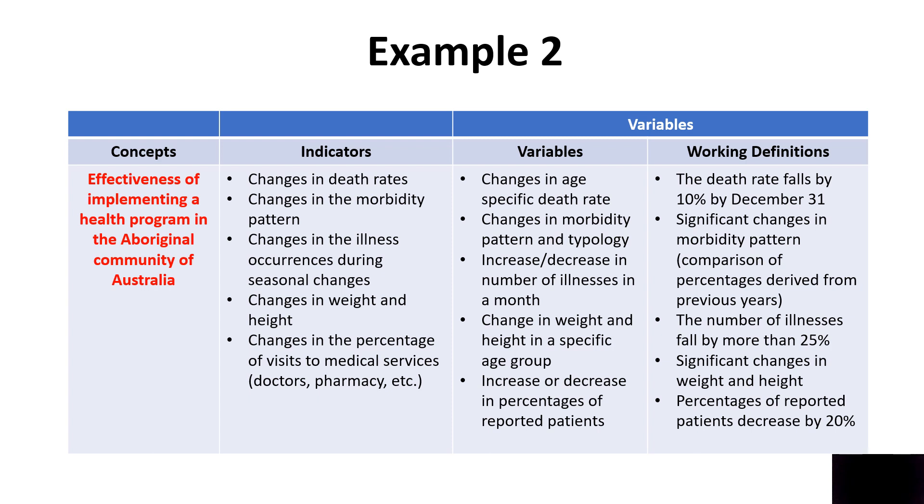What will be a variable? A variable is something that you should be able to measure. If I want to use the change in the death rate as an indicator of the effectiveness of implementing a health program, then I would like to see a change in the age-specific death rate. For example, in 2022, I noticed that people of more than 50 years old, the death rate of them dying out of natural illnesses was 67% out of the 100% who have died. And then in 2023, the death rate has become 40%. So, there is a fall in the specific death rate of people more than 50 years old. It could be in infants or it could be in young adults, depending on what specific group you are targeting.